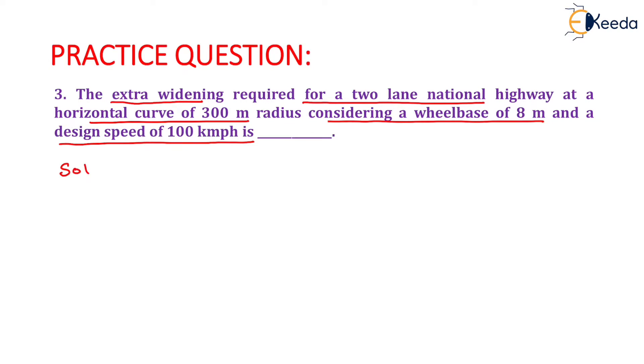Now, we need to calculate here the extra widening value that is We and formula of We will be equals to NL square upon 2R plus V upon 9.5 root R.